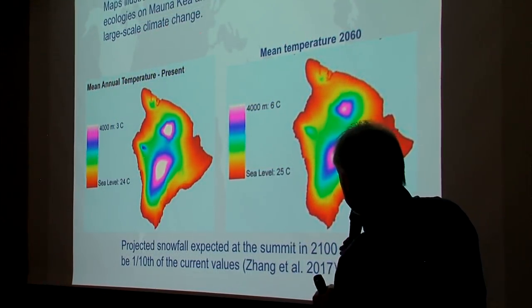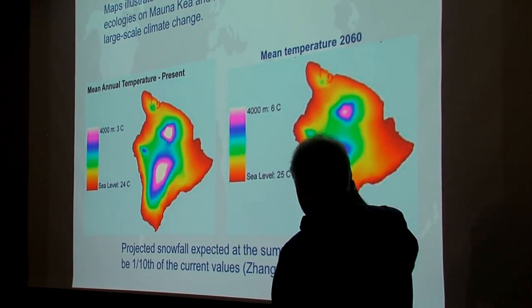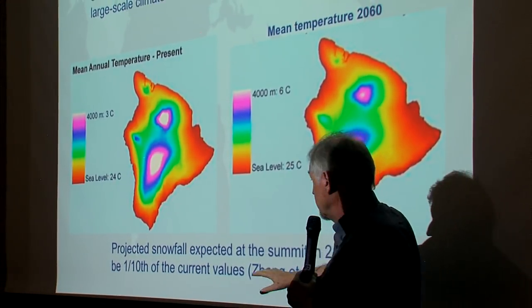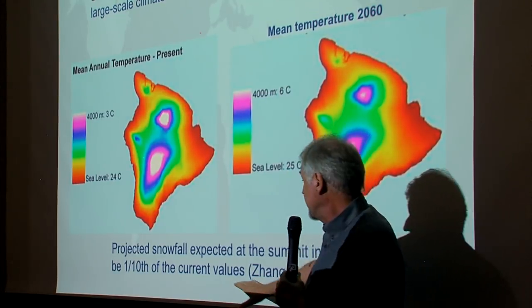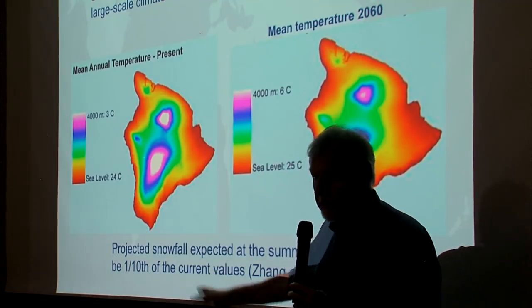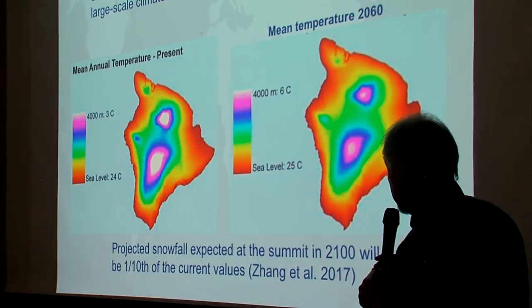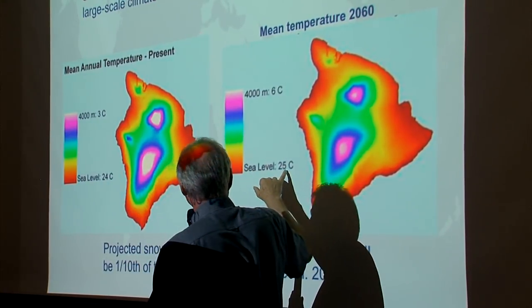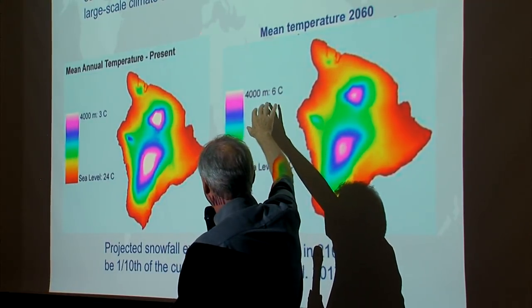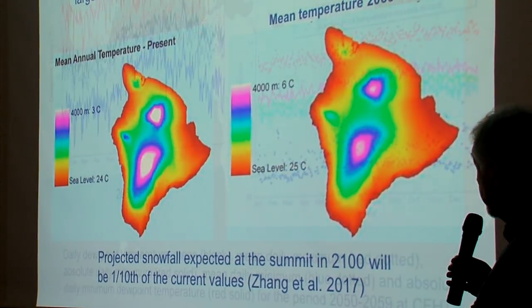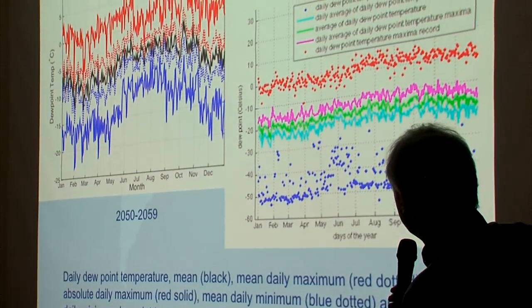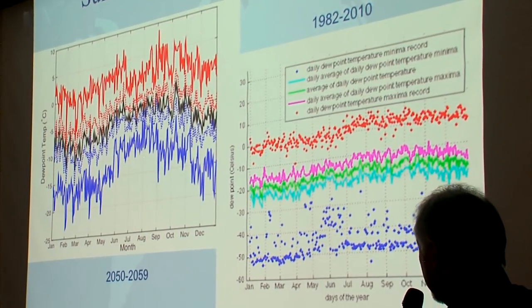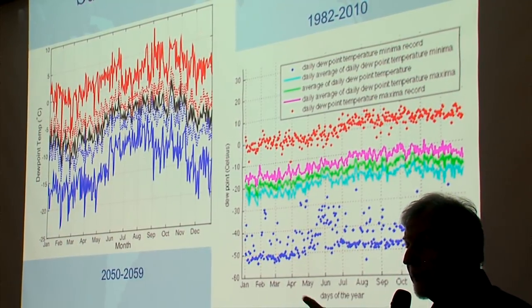A study by Zhang et al. 2017 projects that snowfall at the summit will be one-tenth of the current value by 2100 — not completely gone, but greatly reduced. Sea level temperature is not expected to go up too much, maybe a degree, but at the summit we're looking at a three-degree Celsius temperature increase, mostly happening in the summertime. Dewpoint temperature is also increasing — there's going to be more moisture in the air.